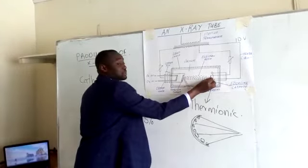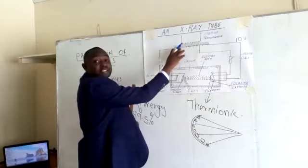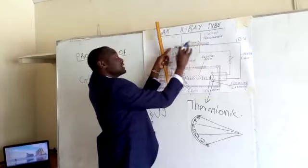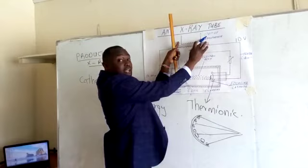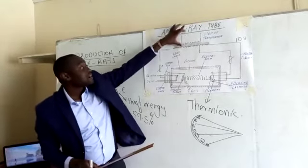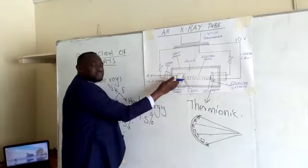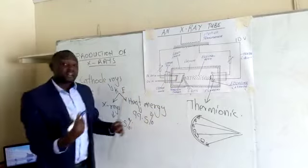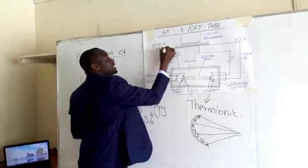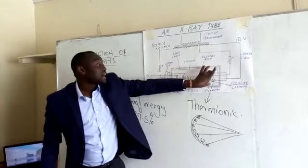After the cathode rays are produced, they are accelerated towards the target by the anode. The anode is supplied by a voltage from the transformer — in this case, using the extreme ends where the secondary coil has more turns than the primary, making this a step-up transformer. The voltage supplied to the anode can be varied from about 10 kilovolts (10,000 V) all the way up to 150 kilovolts (150,000 V).